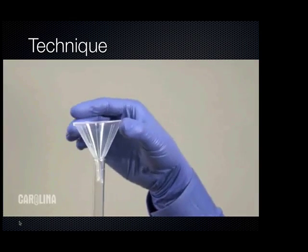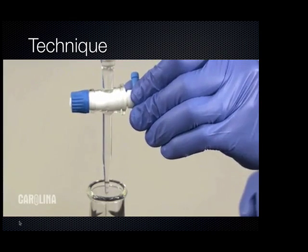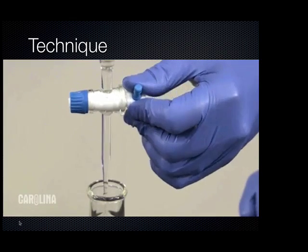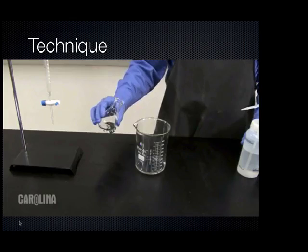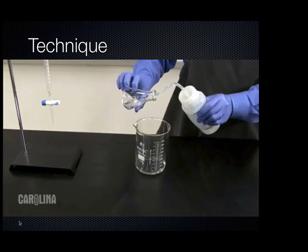Remove the funnel. Place the Erlenmeyer flask under the tip and open the stopcock to allow a few milliliters of titrant to flow through, releasing any trapped air. Rinse the tip of the burette with water. Empty the liquid into a waste container and thoroughly rinse the flask. It is not necessary to dry the flask.